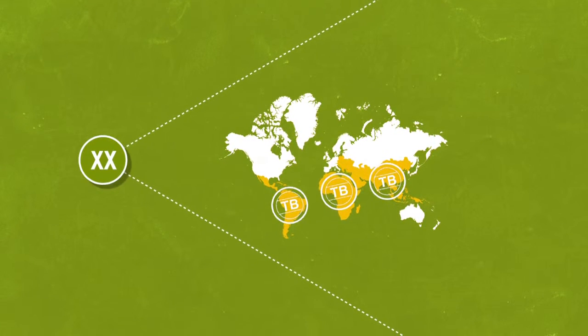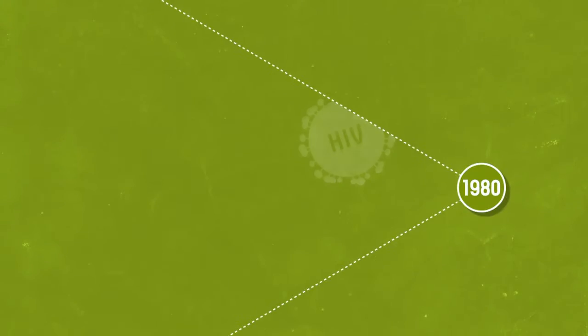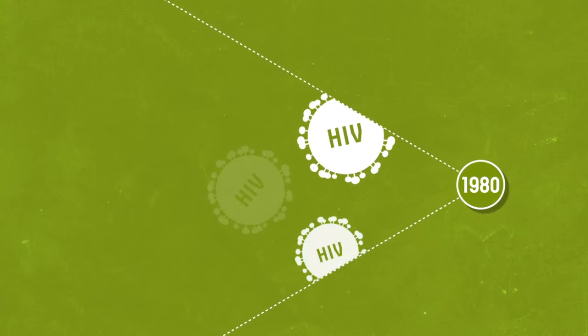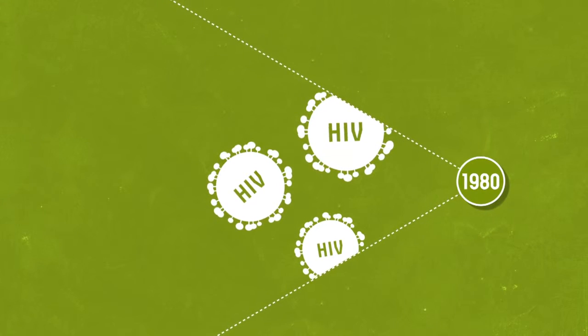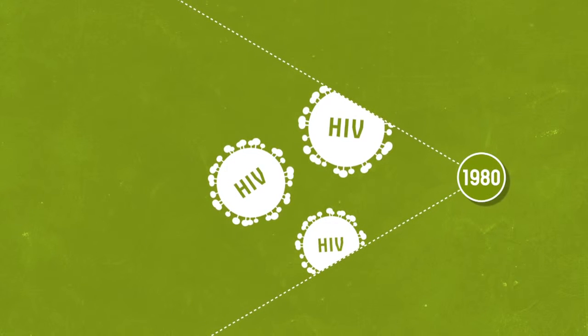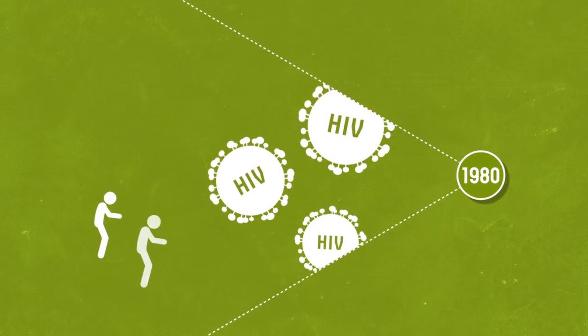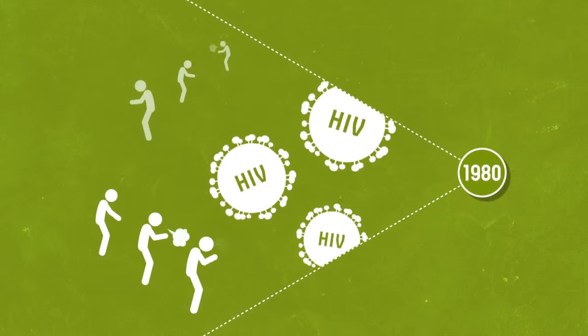Wealthy countries were finally able to forget the disease, until the 1980s, when it resurfaced along with the AIDS epidemic. People living with HIV have weakened immune systems, and so are more susceptible to tuberculosis.